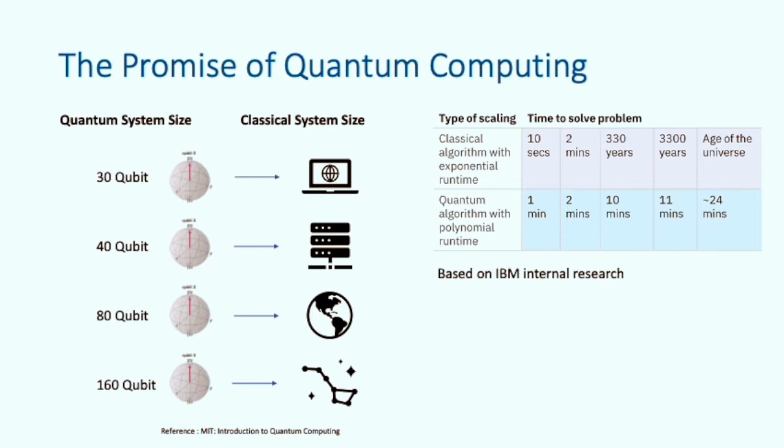We can get a sense of the computational power of a quantum computer by looking at the equivalent classical requirement to simulate a quantum computer. Looking at the diagram on the left, to simulate a 30 qubit system would take a reasonably powerful laptop. Just adding an additional 10 qubits would require a small supercomputer. Doubling that again to 80 qubits and we need all of the computers on Earth. Doubling again to 160 qubits and there's not enough silicon on the planet to build enough classical computers. So you can see that just a small increase in the number of qubits requires massive increases in the classical resources required.